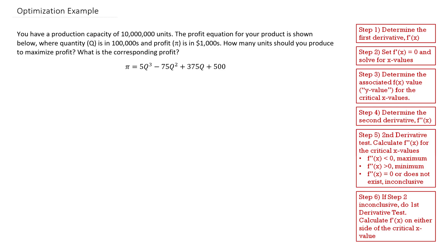What we're looking to do is maximize profit and we're given this equation for profit. So a classic optimization problem. Step one: we're going to determine the first derivative. Pi prime is going to be equal to — the derivative of 5q cubed is 15q squared, the derivative of 75q squared leaves me with 150q, the derivative of 375q is 375, and the derivative of 500 is 0. So step one is done.